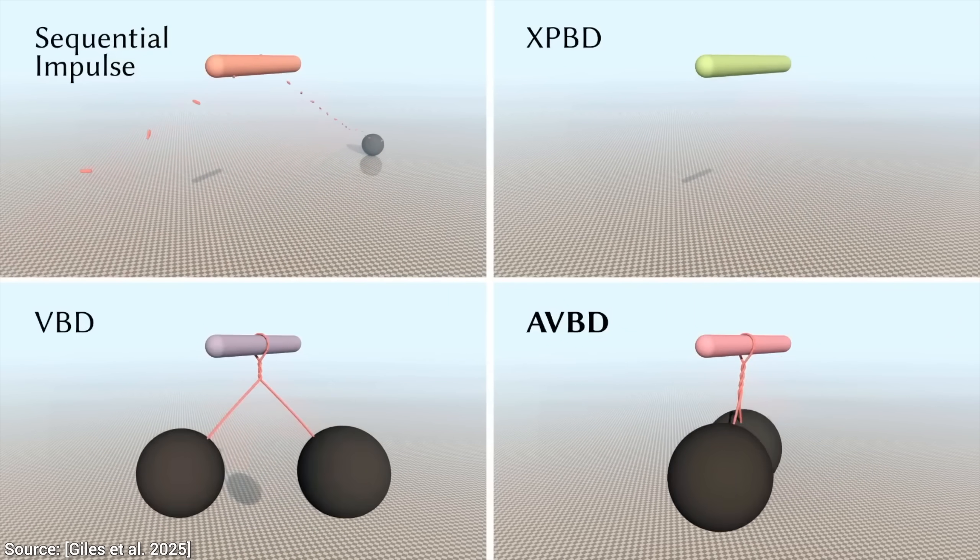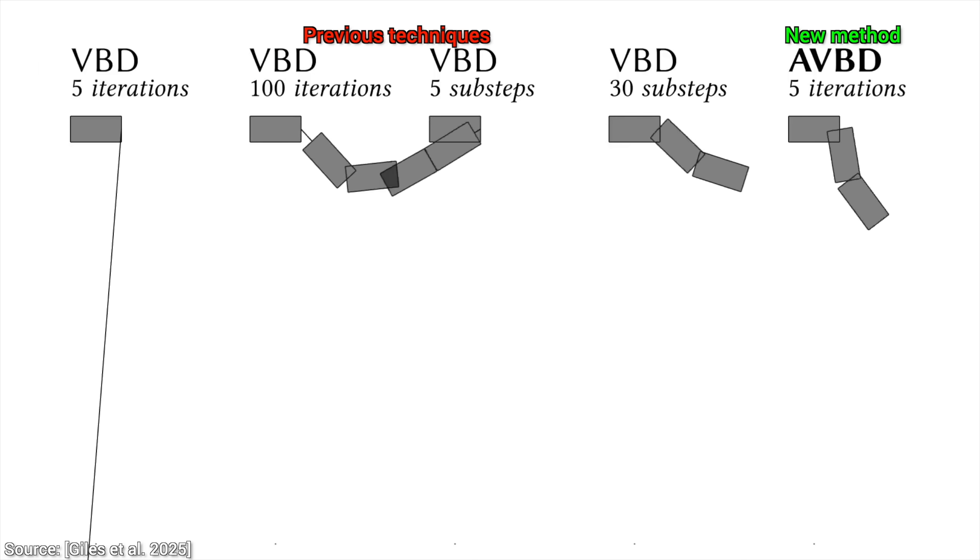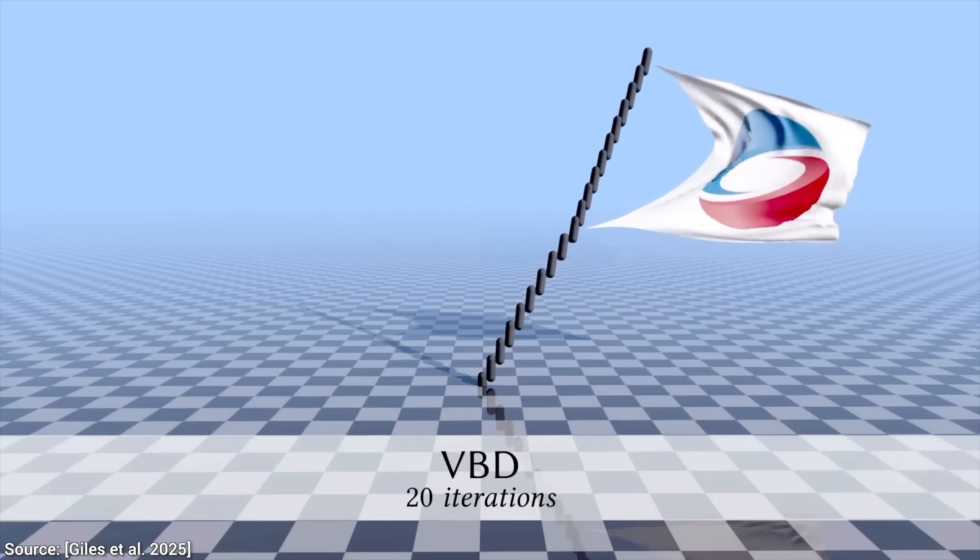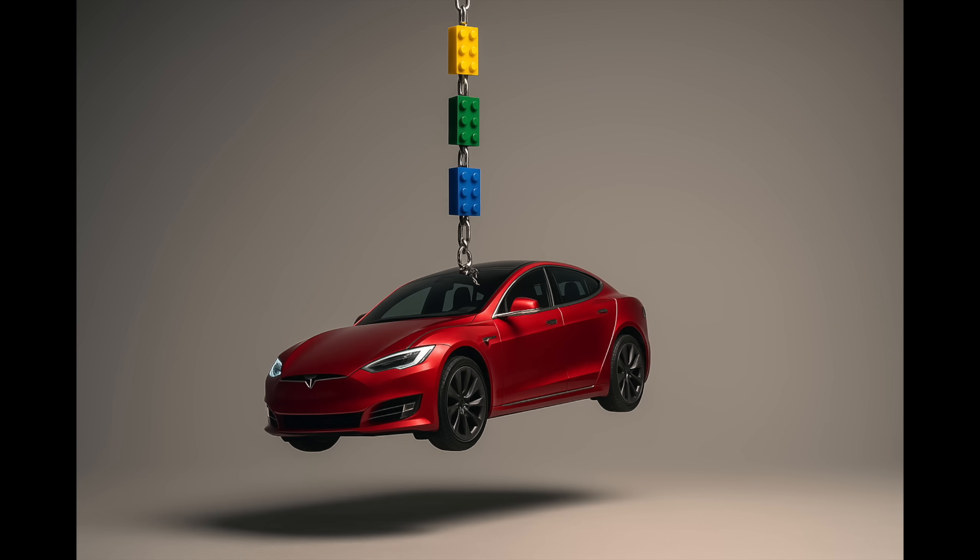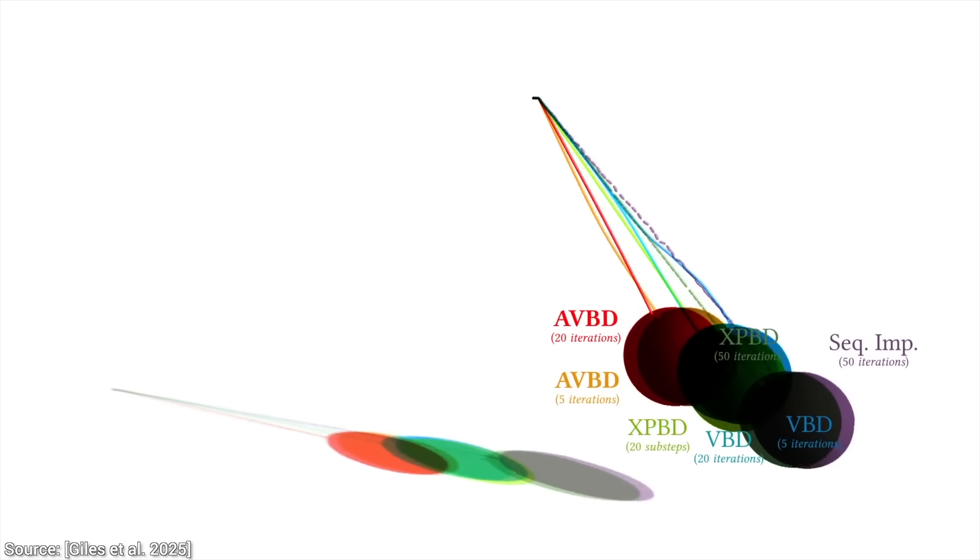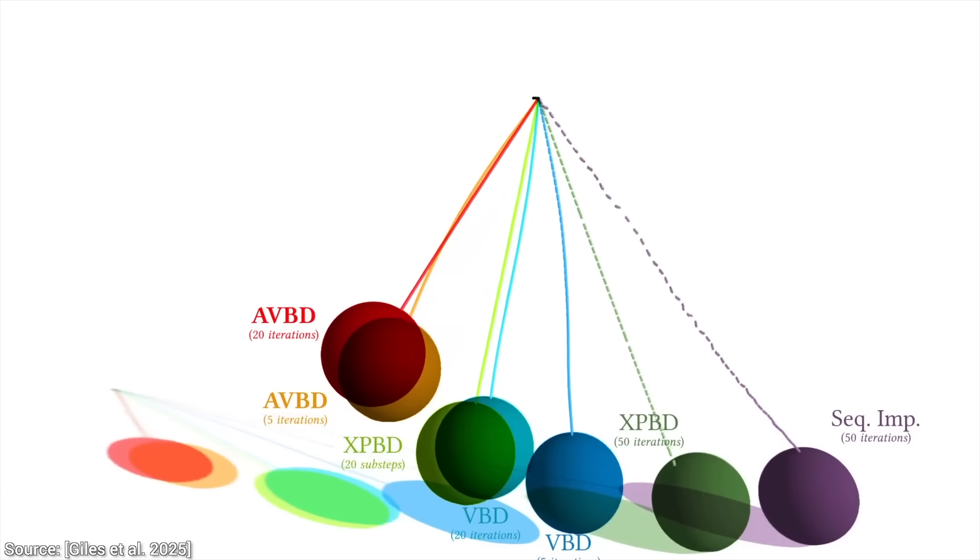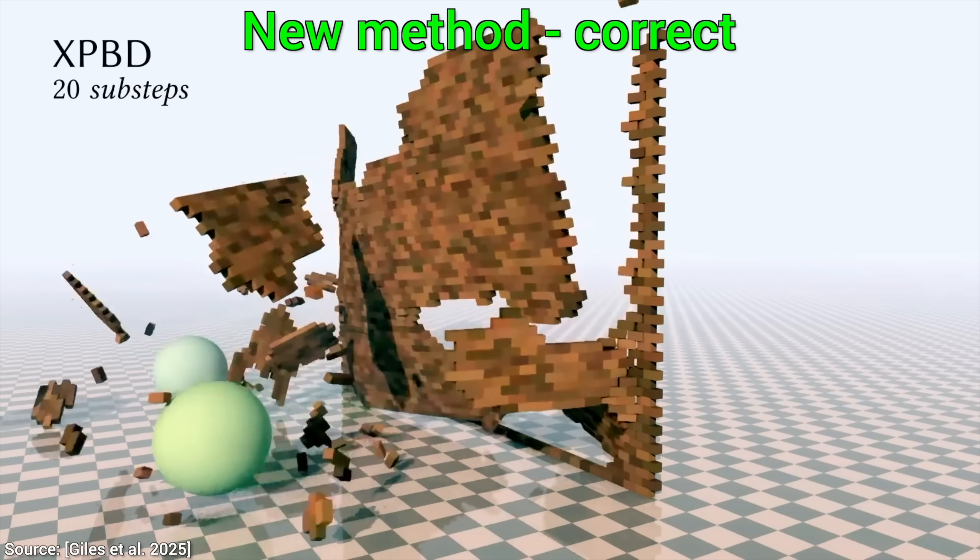So, what is the problem? The problem is that the mass of the ball is 50,000 times higher than the chain holding it, which is given by 50 connected bodies. Imagine having a Tesla Model S hanging off of a few Lego bricks. Of course, it results in an excessive amount of stretching with previous methods. But not with the new one, which is the correct solution. Amazing.